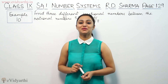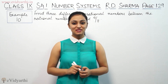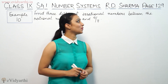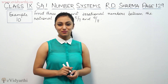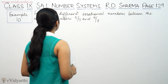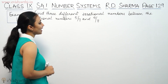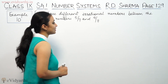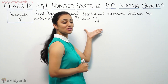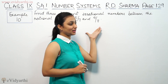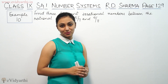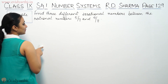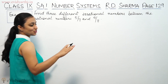Hi, this is Khushpoor with another question of number system. This is Example 10 from page number 1.29 of Adi Sharma. It says: find 3 different irrational numbers between the irrational numbers 5 by 7 and 9 by 11. If you have two rational numbers, you can find irrational numbers between them. So 5 by 7 and 9 by 11 are rational numbers.